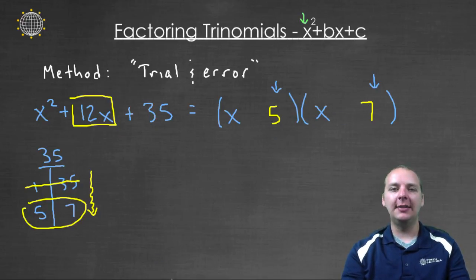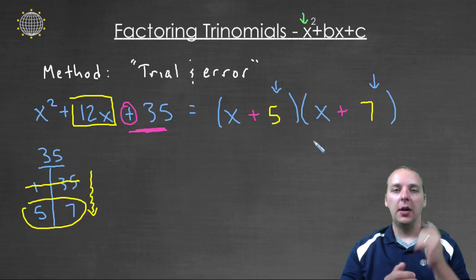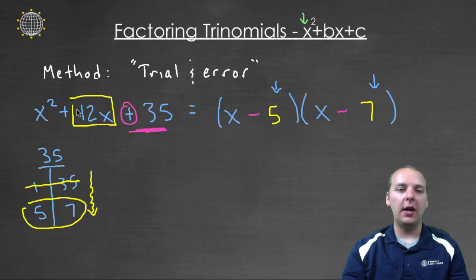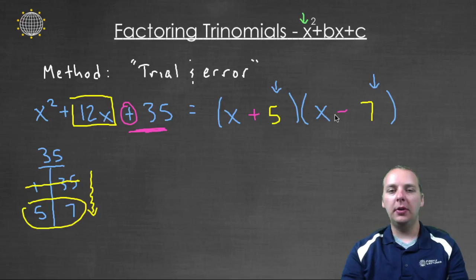Now to look at the signs, here's what I typically do, I start by looking at the ending number. In our case we have a positive thirty five. Well the only way you can get a positive thirty five is by having a minus and a minus, or a plus and a plus. That's the only way you can multiply to get a positive, a positive times a positive, or a negative times a negative. But notice if you had a negative times a negative, they would add to be a negative value, not a positive value, like the twelve x that we're wanting. So I think let's try a plus and a plus, and then let's try it, trial and error. Let's see,